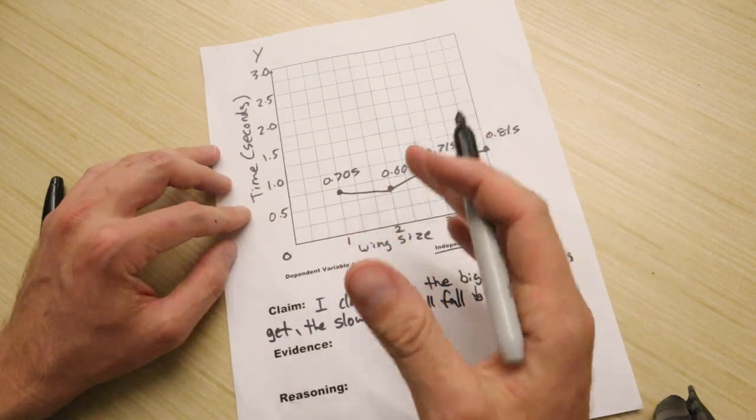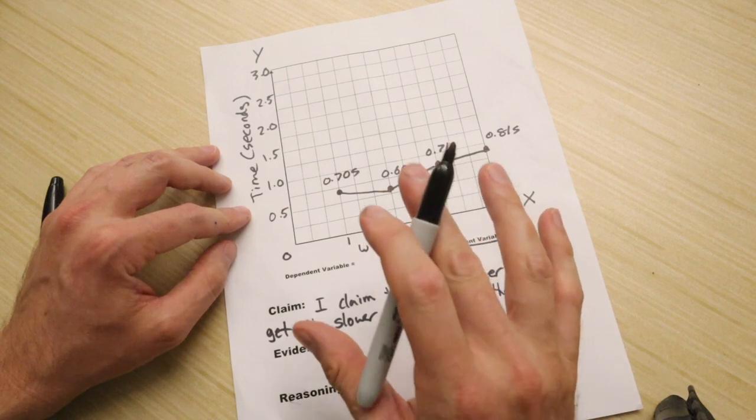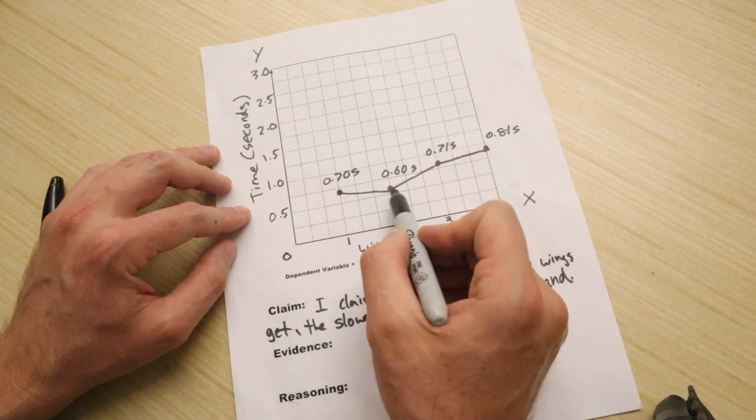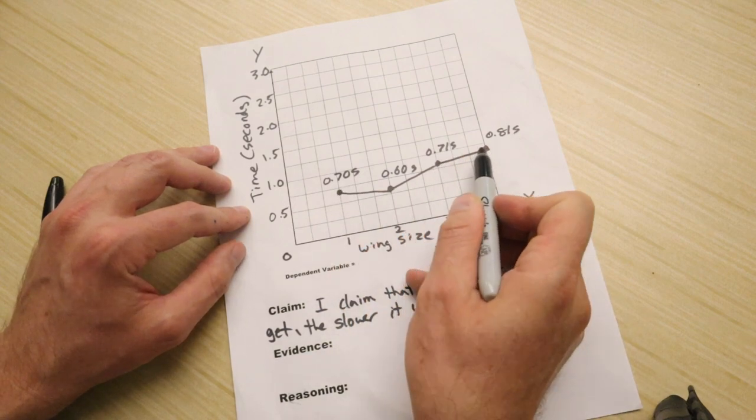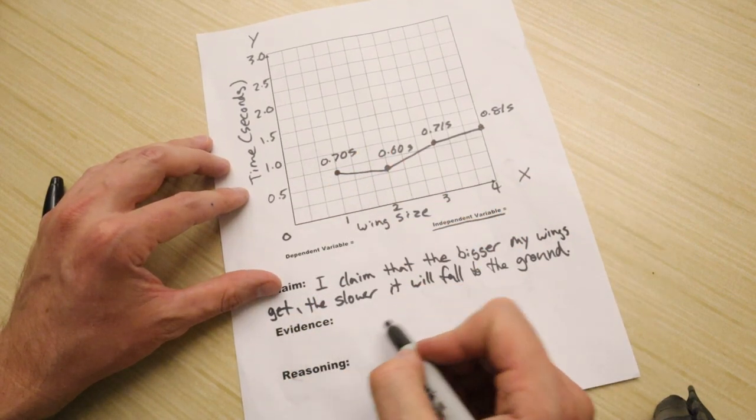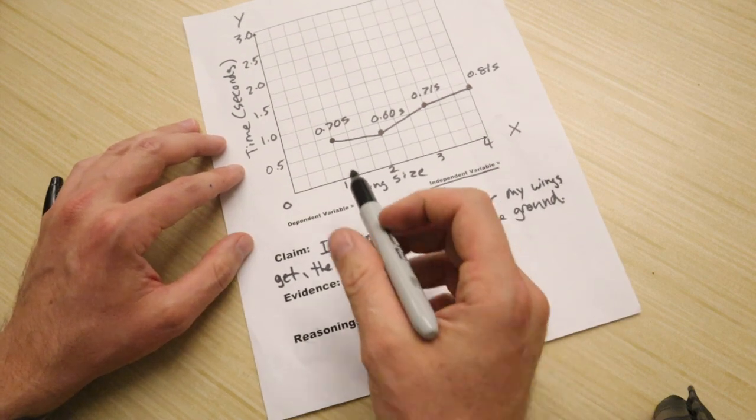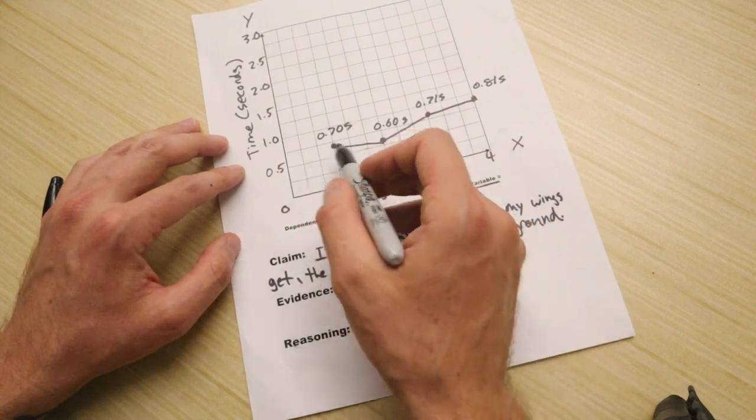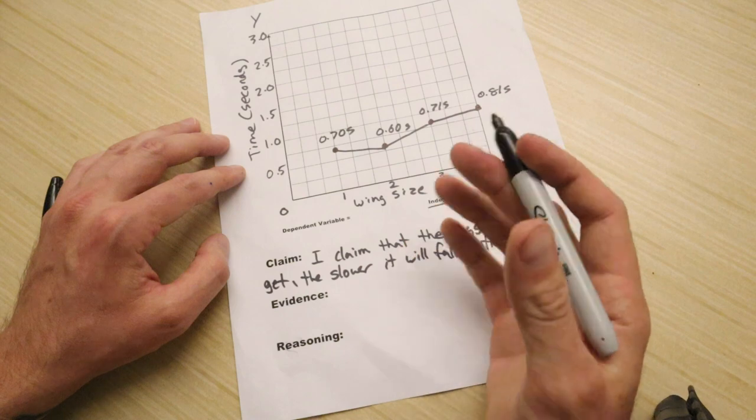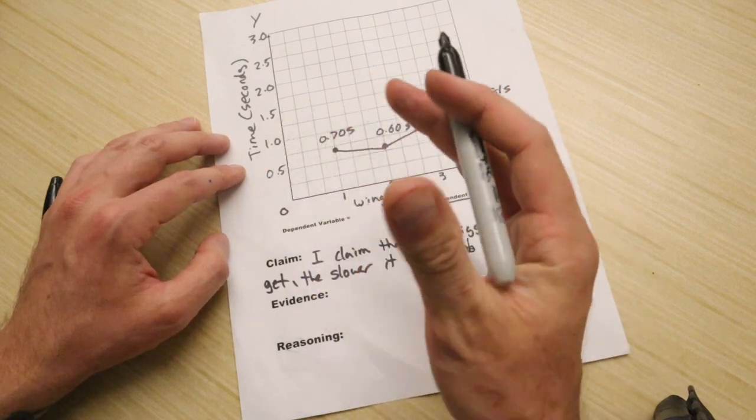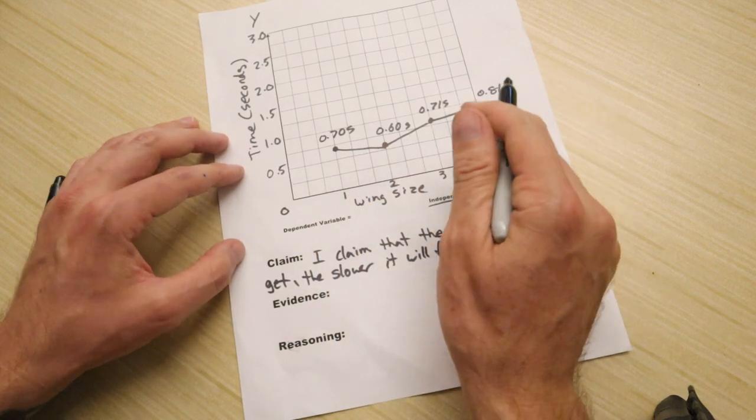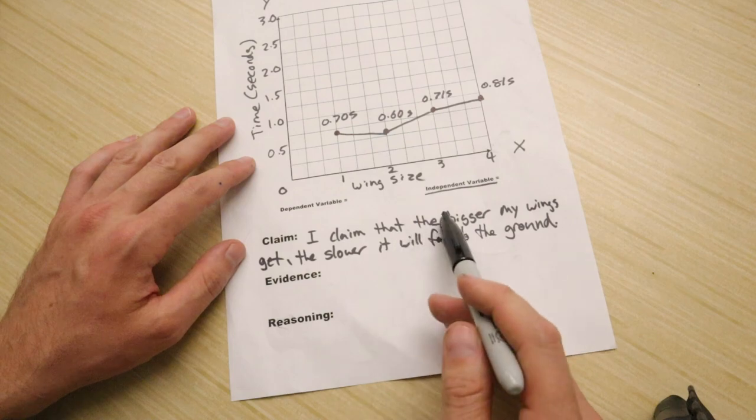So now this just gives us more of a visual representation about what our data is telling us, or what's happening with our data and all of our trials. So initially it sped up, but then it started to slow down again. So definitely my data supports my claim. I can write about that in my evidence. And for my reasoning, I could show by looking at my graph that initially it sped up, but then as my wings got bigger, the time increased. So that's my reasoning. According to the information shown on my graph that my helicopter, as the wing sizes got bigger, so did it in the time it took for it to fall down to the ground. So then you just explain this in that area down below.